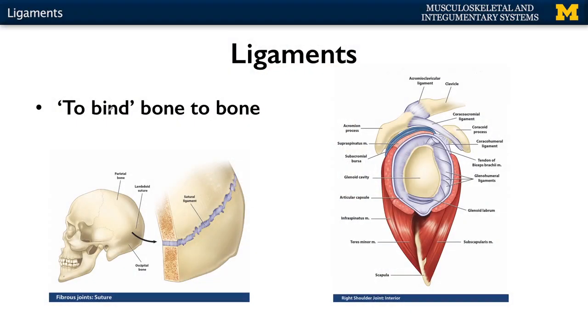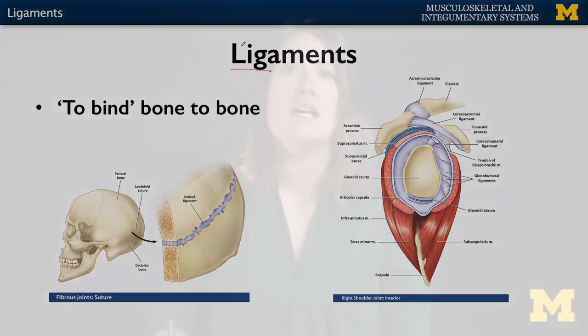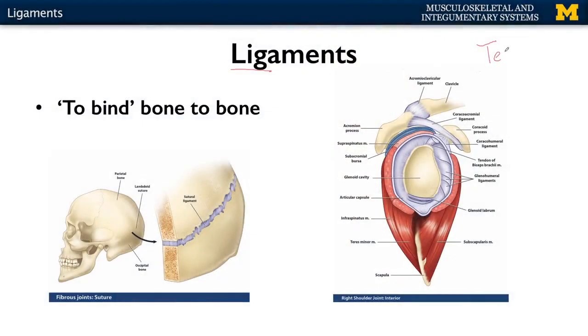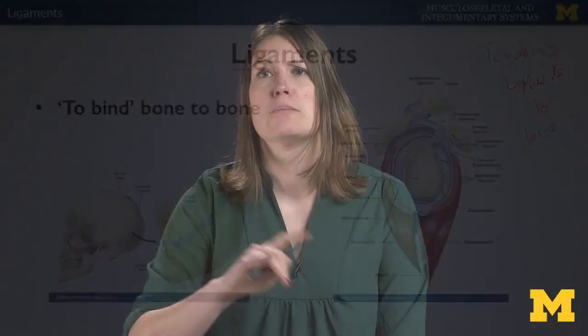The prefix 'lig' stands for 'to bind,' and that's exactly what a ligament does. Ligaments bind bone to bone, which is different from tendons, which we'll talk about in a lot more detail later. Tendons are going to be muscle to bone. That's where a lot of people get confused between ligaments and tendons — ligaments bone to bone, tendons muscle to bone.